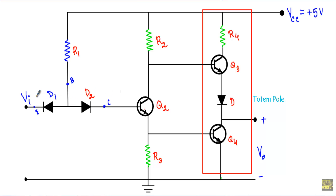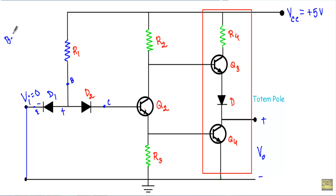Consider the first case when our input will be at logic 0. This terminal will connect to the ground terminal. The positive terminal of the 5-volt supply is connected to the base terminal of Q1, and the negative terminal is connected to the emitter terminal through ground. That means the base-to-emitter junction of transistor Q1 is in forward bias — our diode D1 is in forward bias, so I can replace diode D1 with a short circuit.